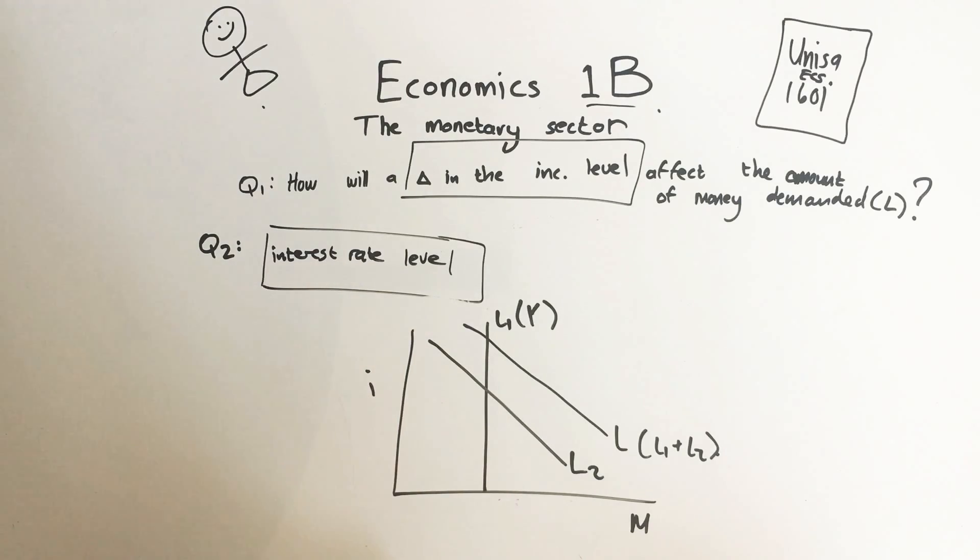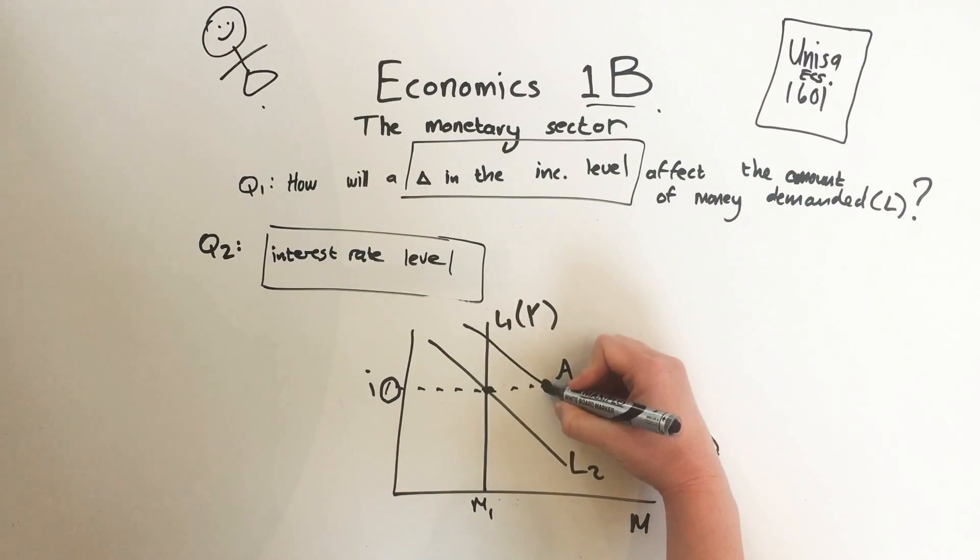Okay, what will happen when the interest rate level changes? This is actually very interesting. Let's start with this point. If our original interest rate was over here - interest rate 1 - our demand for L2 was there, and we plus our M1 to that one. So that would be M1, and that is our first point on the curve.